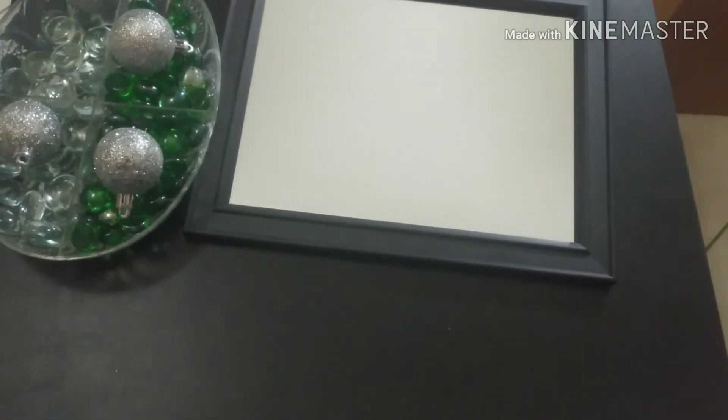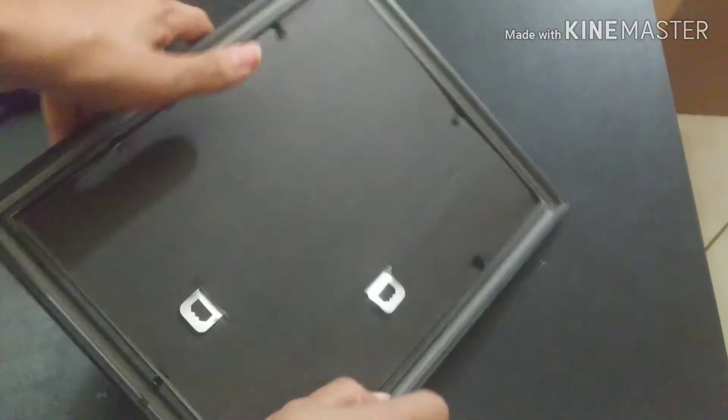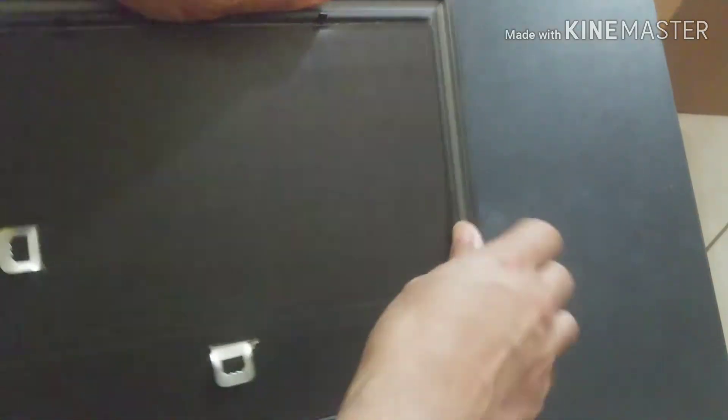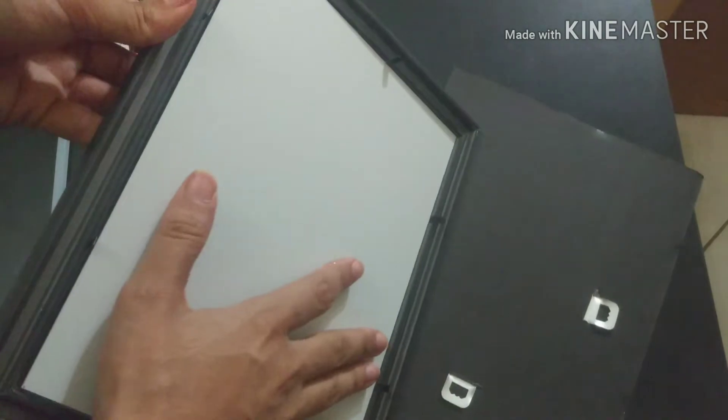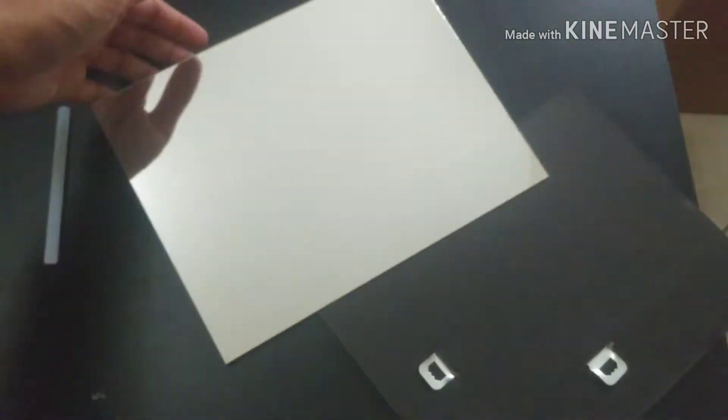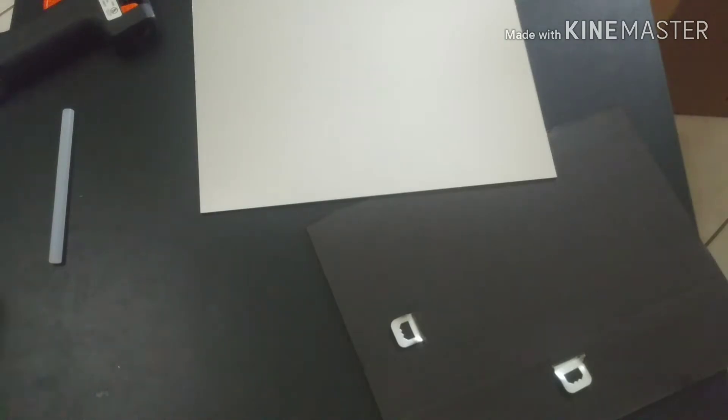So for this, we will need any Dollar Tree mirror. We're going to get the frame off, take the backing off, and just take the mirror so that it could be just the mirror without the frame. We will also need the glass beads, the color of your choice, and a hot glue gun with a lot of glue.